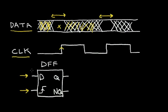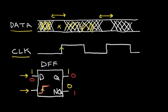For example, if the data input is a 1 when the clock signal transitions high, this 1 will be transferred to the output Q, and NQ will be the opposite — a 0. If the data signal is a 0 and the clock transitions high, a 0 will be transferred to the Q output and NQ will be a logical 1. So let's consider how we can design a D flip-flop so that when the clock transitions high, we grab the data.